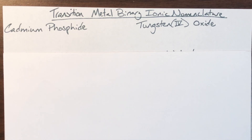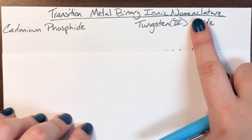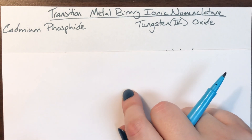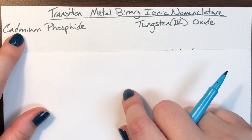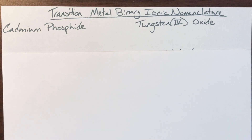We're going to do some transition metal binary ionic nomenclature practice. First up we have cadmium phosphide. With any transition metals I'm going to have to calculate oxidation state — that charge for my cation — so that I can figure out what I'm going to actually need to use for my subscript.